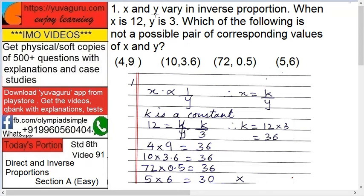Here, x and y are two variables and they move in inverse direction. What do you mean by inverse direction? If x moves up, y moves down. Now when x is 12, y is 3.